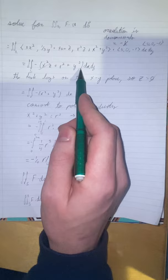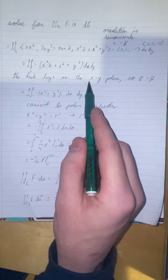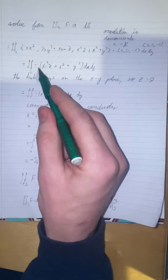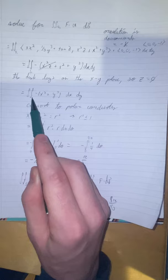that z will be equal to zero the whole time, then you can cancel out this term. So then your resulting integral is the double integral of negative x squared plus y squared dx dy.